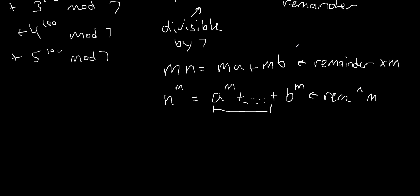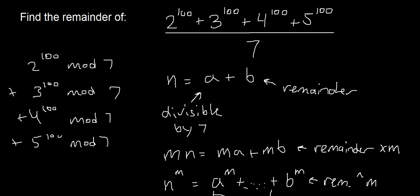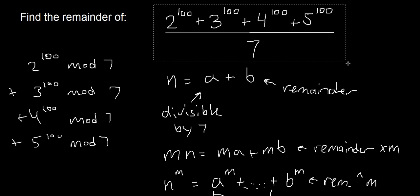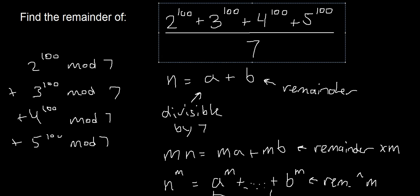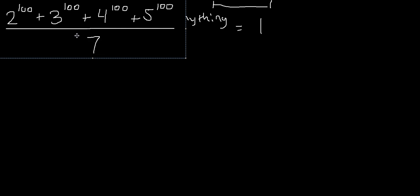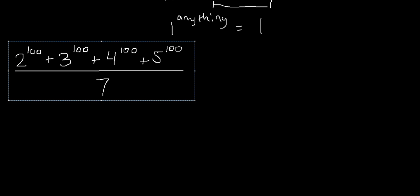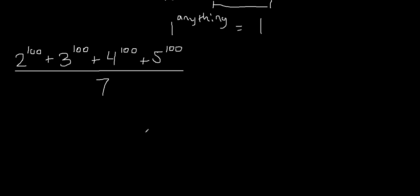What's the remainder that doesn't change when you take it to a power? Probably 1, right? 1 to the power of anything just equals 1. So since we're dividing by 7, what's a power of 2 that has a remainder of 1 when divided by 7? Probably 8 — it's the smallest such power. So 2 to the power of 3 mod 7 is just 1. And if you take 2 to the power of 3 to any power, the remainder will be 1.